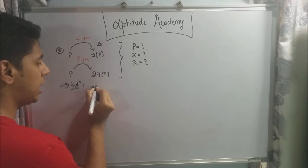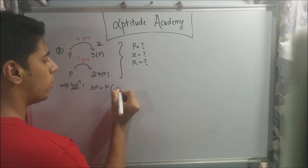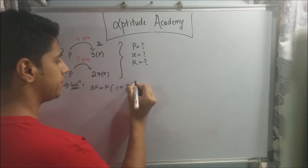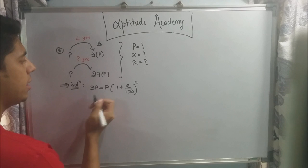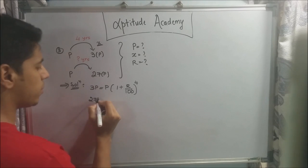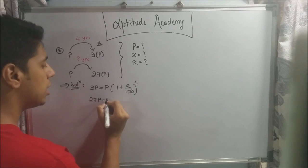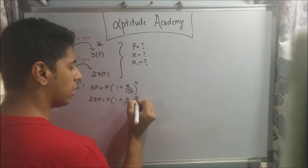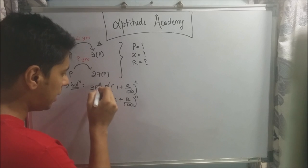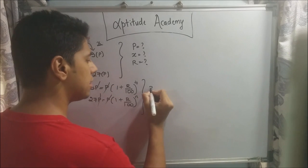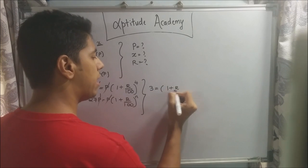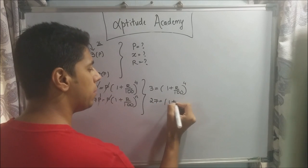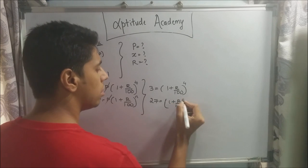Write the equation for each case. For the first: 3P = P × (1 + R/100)^4 — n is 4 years. For the second: 27P = P × (1 + R/100)^N — n is unknown. Cancel P from both sides, giving: 3 = (1 + R/100)^4, and 27 = (1 + R/100)^N.